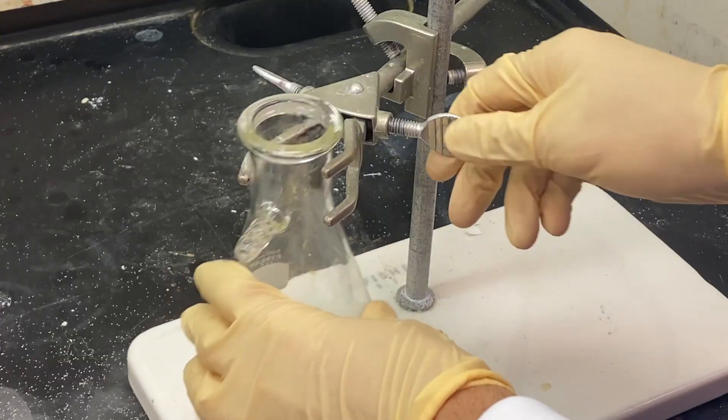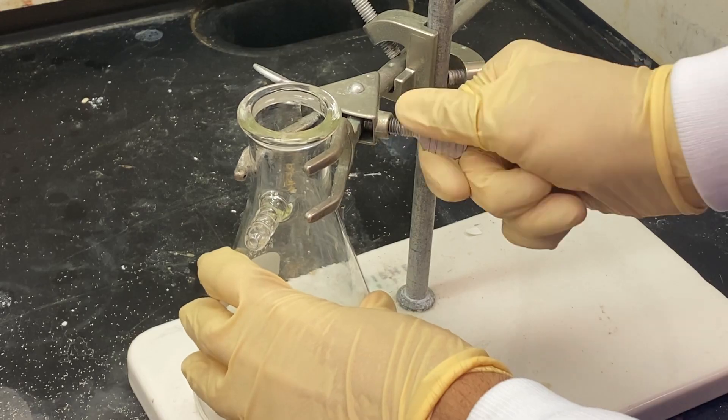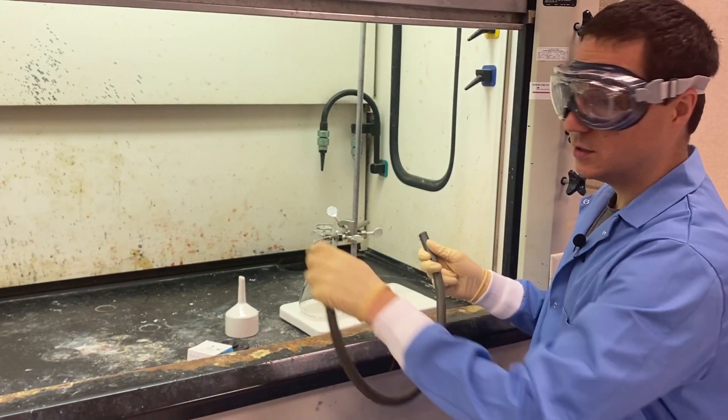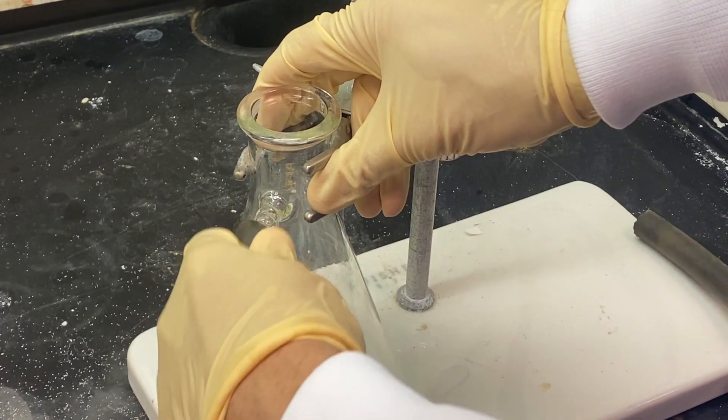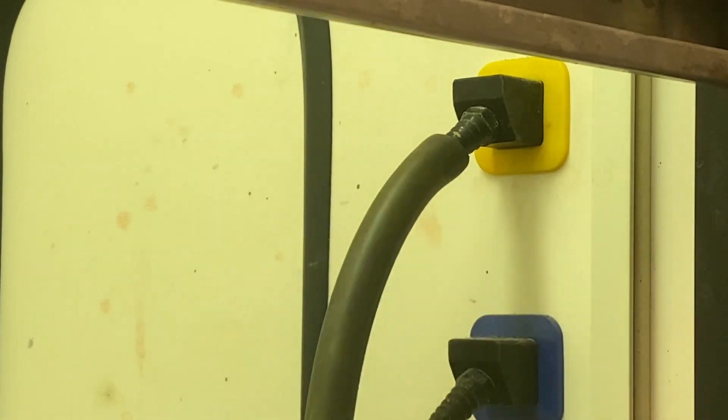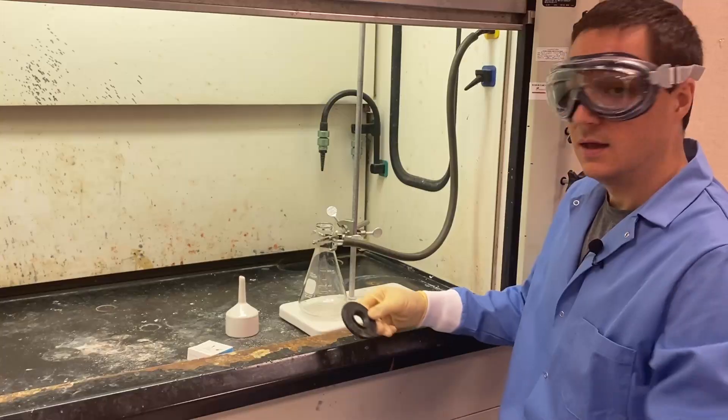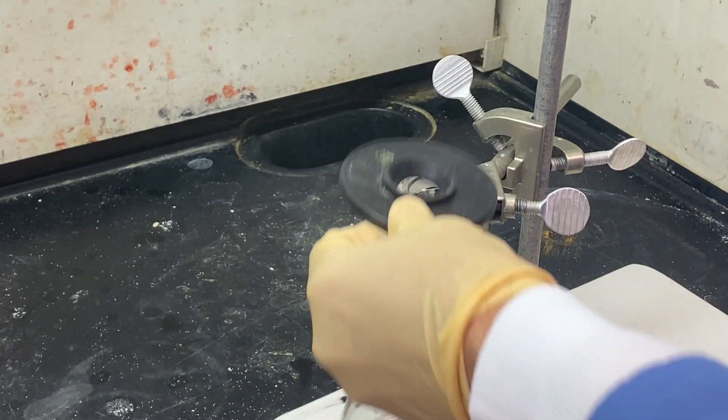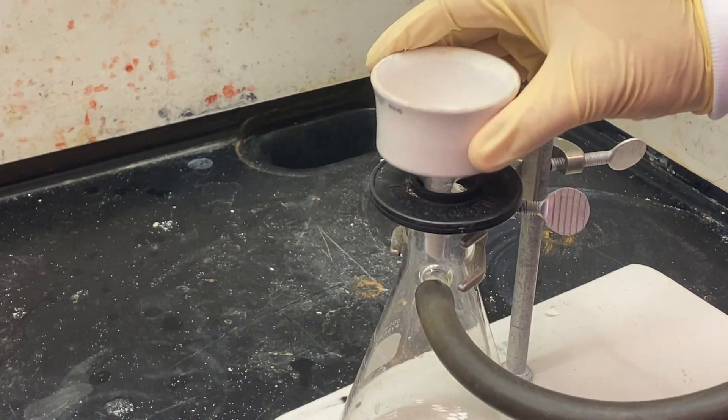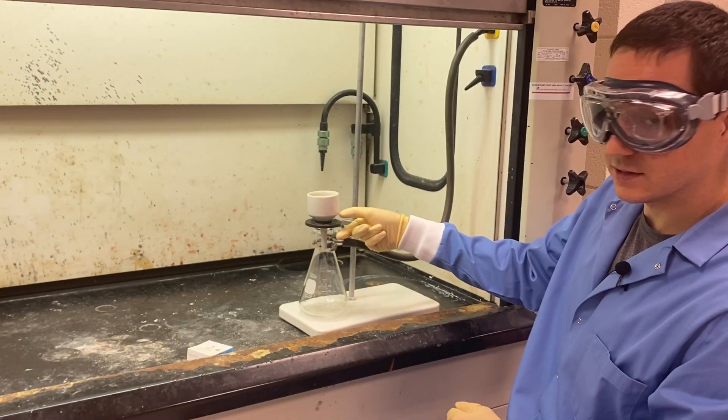First, the filtration flask is clamped down to a ring stand. Then, a vacuum hose is hooked up to the filtration flask and to the vacuum line. You'll want to place the tube out of the way. Next, a rubber ring is placed on top, and a Buechner funnel is placed in the ring. This creates an airtight seal.